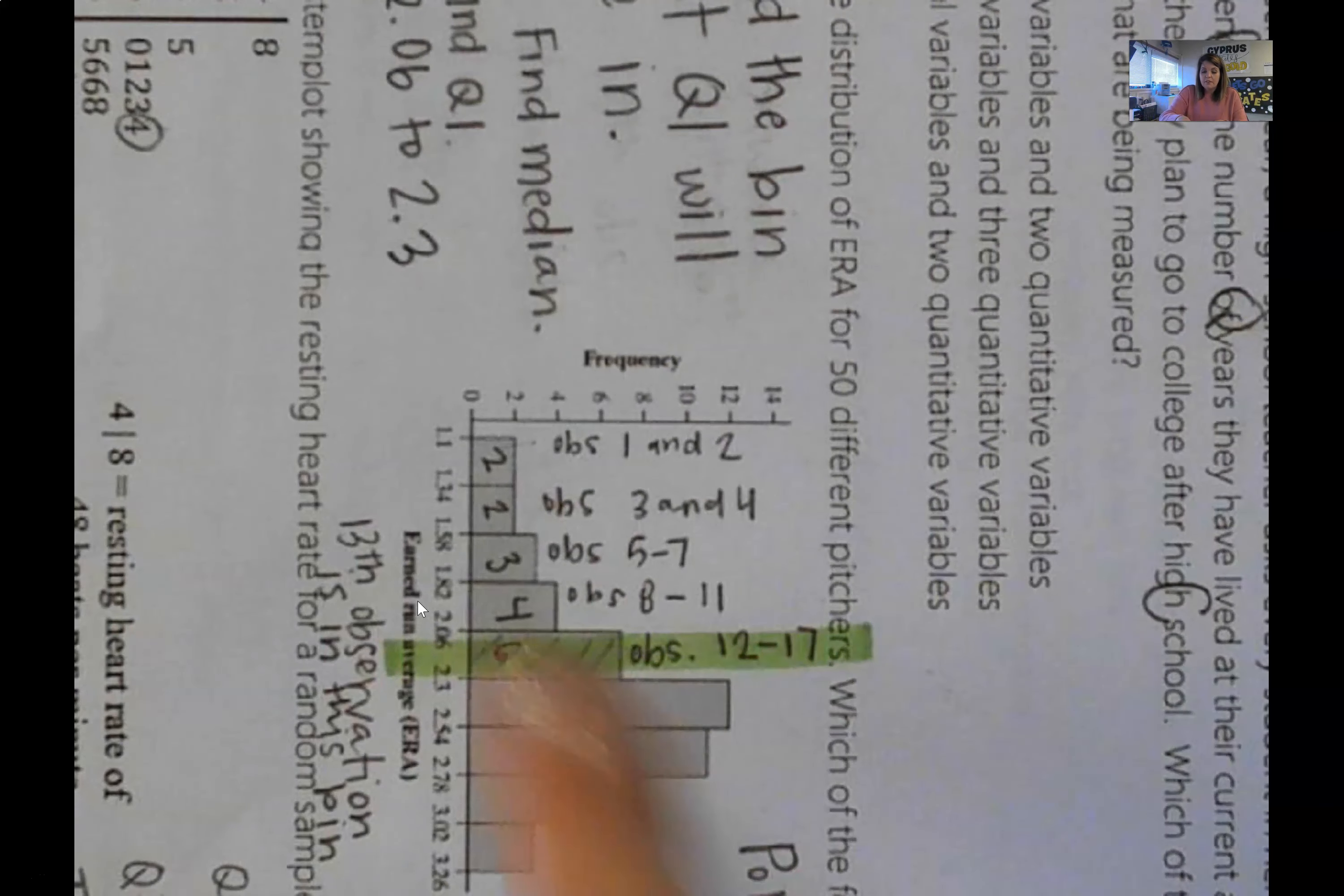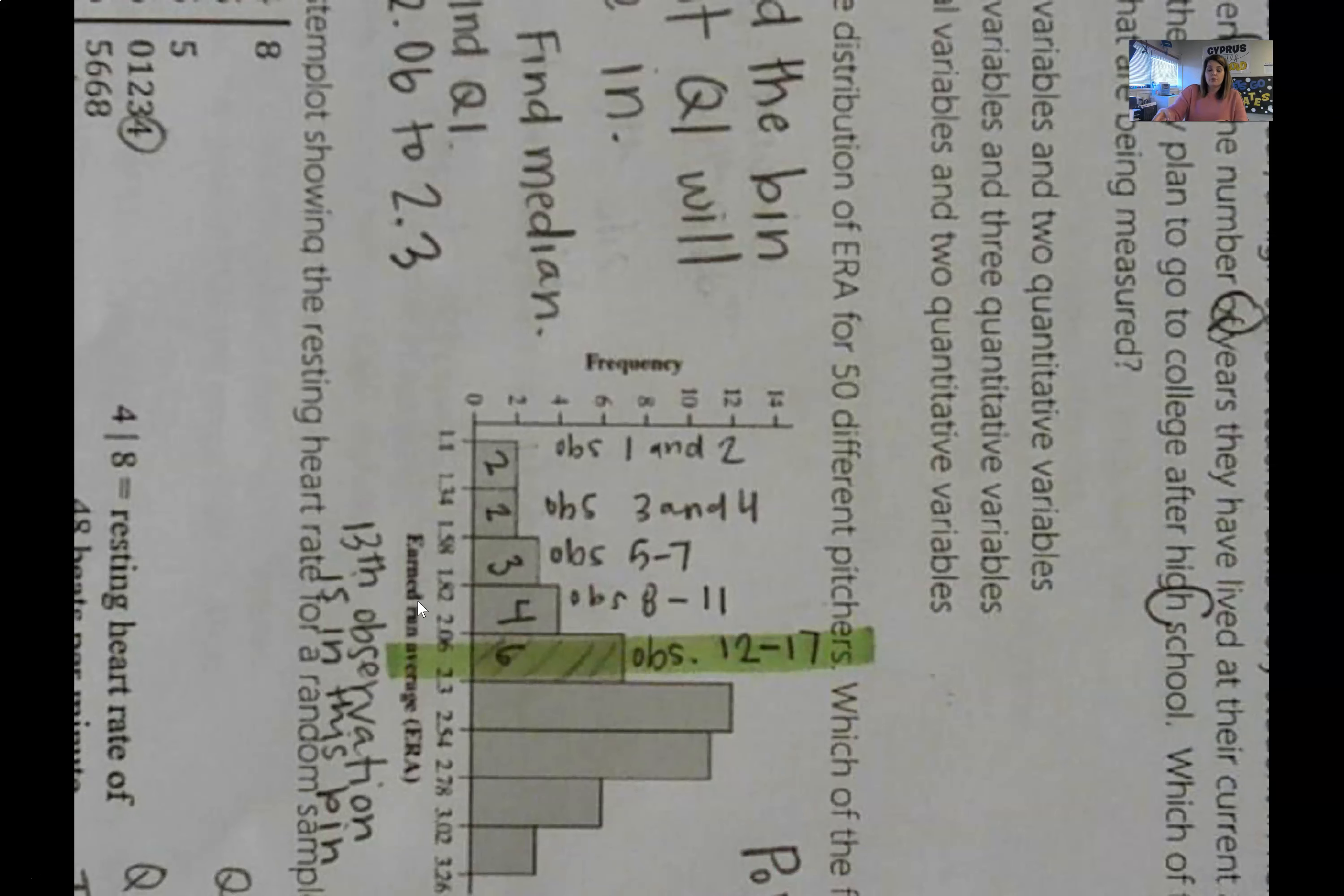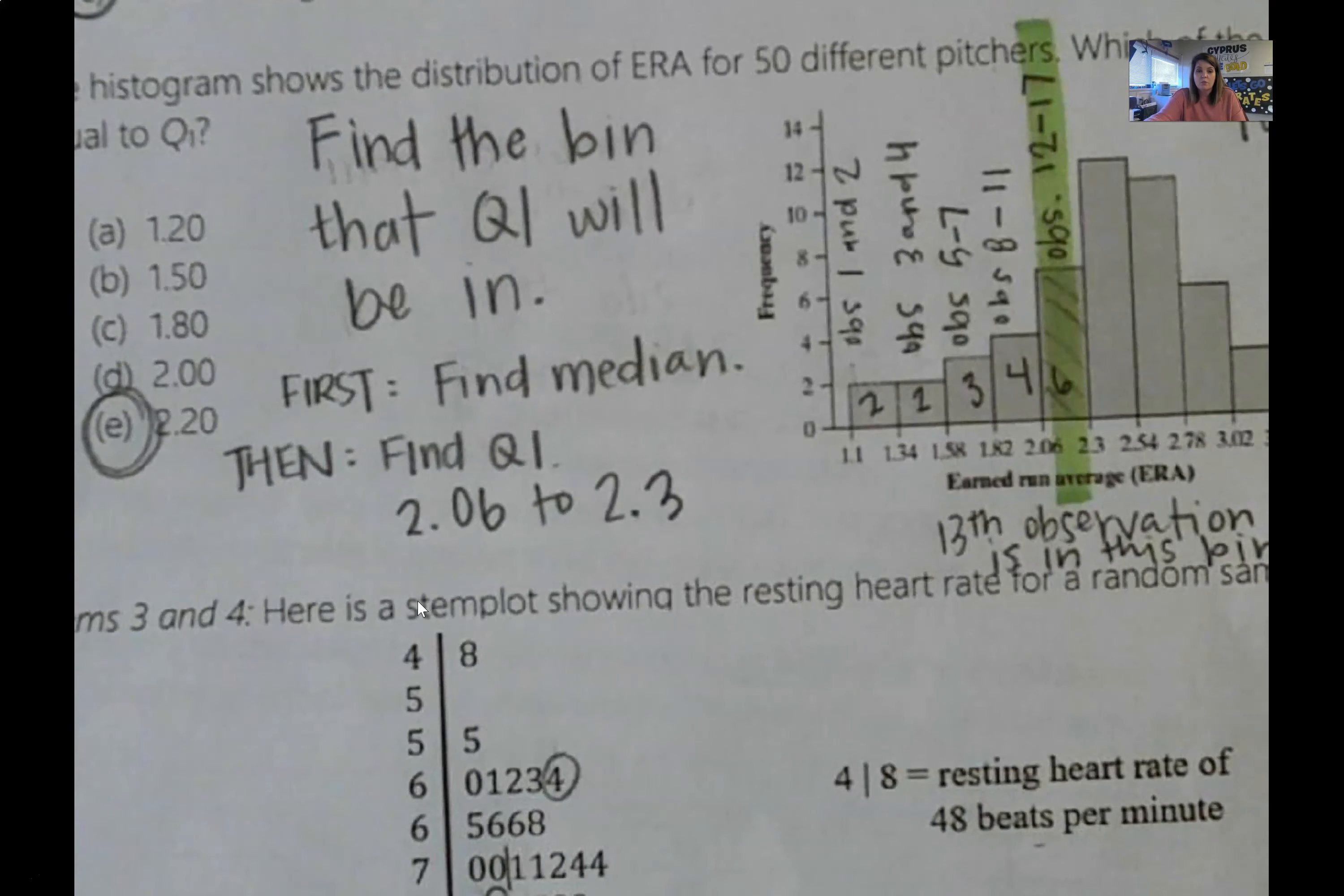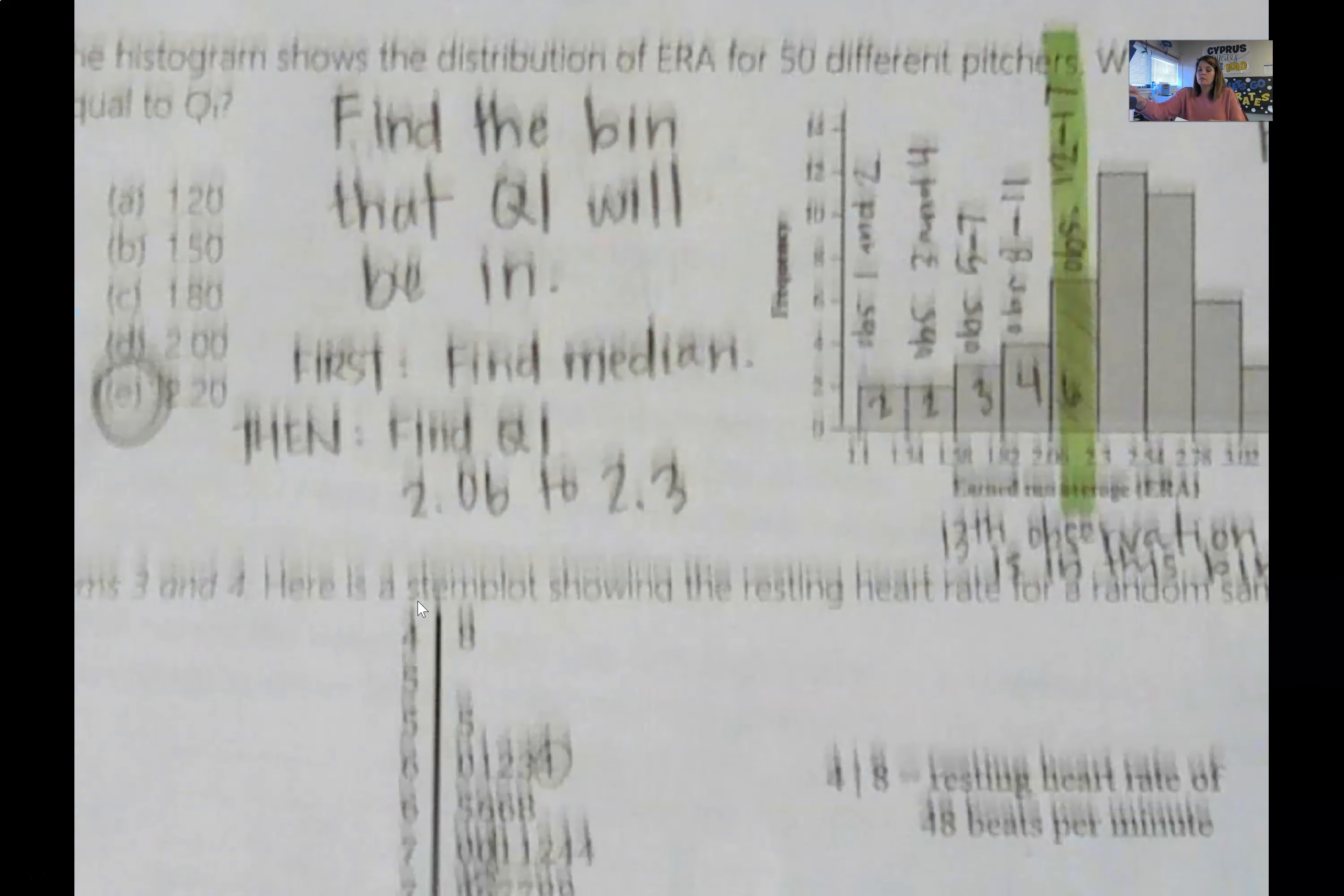So then the next thing that I need to do is figure out what bin is the 13th observation in. So if I turn my histogram to the side, you can see that I have labeled. This is observation one and two, three and four, five to seven, eight to 11, and 12 to 17. So the 13th observation is in this bin I have highlighted. It is 2.06 to 2.3, which means that it has to be echo. The only one that is possible is 2.20.